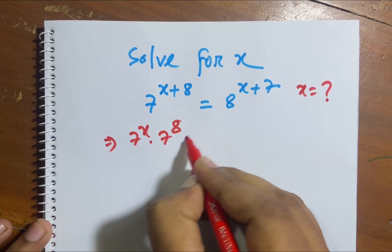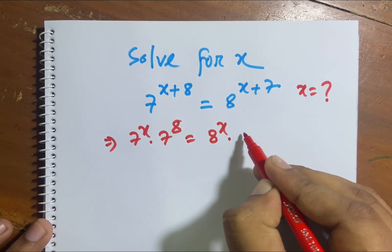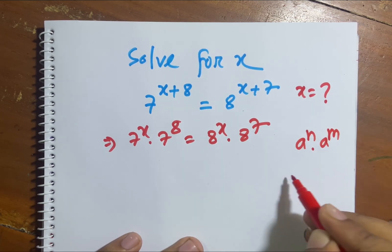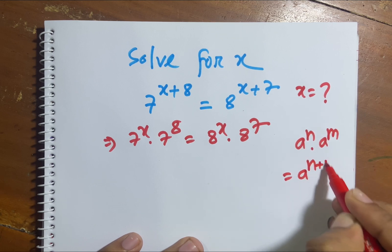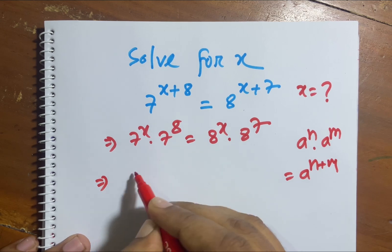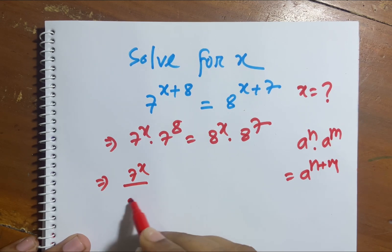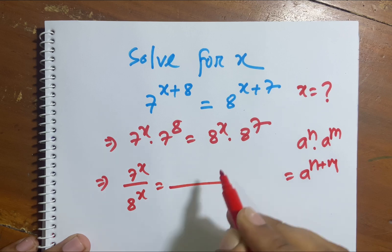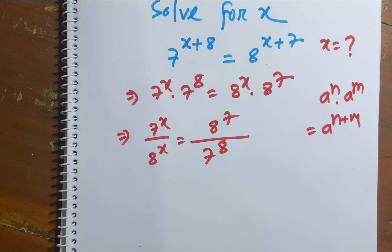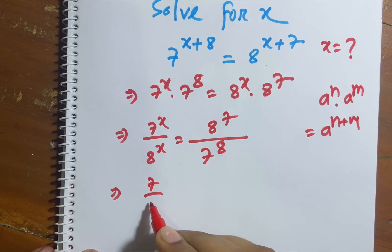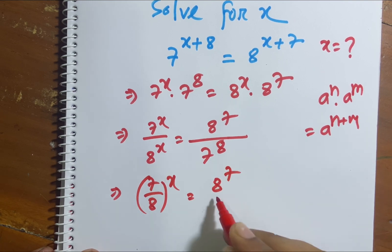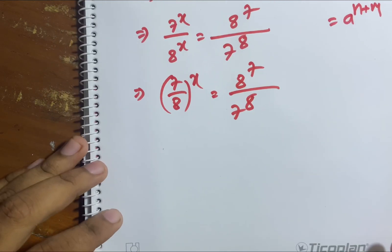We rewrite using exponent rules: 7^x times 7^8 equals 8^x times 8^7. We know that a^n times a^m equals a^(n+m). Following this formula, we rearrange to get 7^x divided by 8^x equals 8^7 divided by 7^8, which gives us (7/8)^x equals 8^7 divided by 7^8.